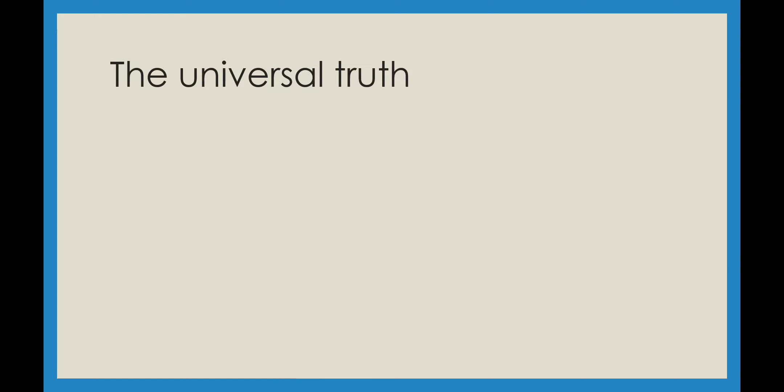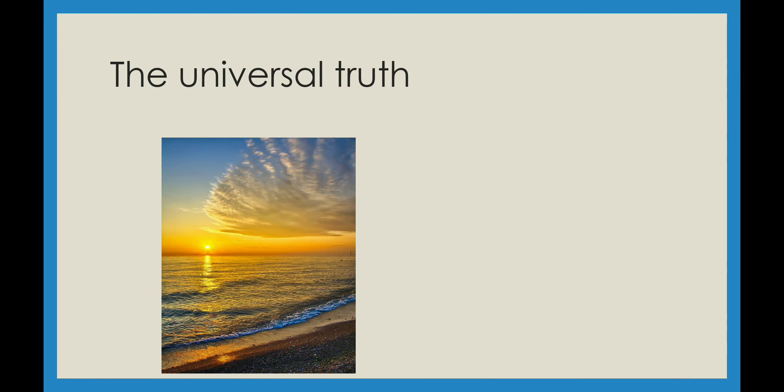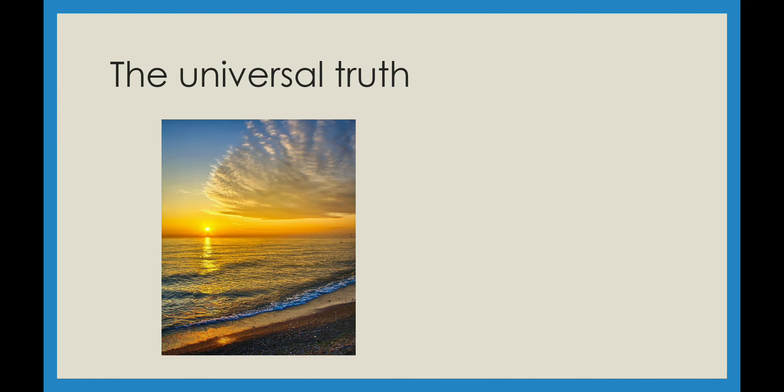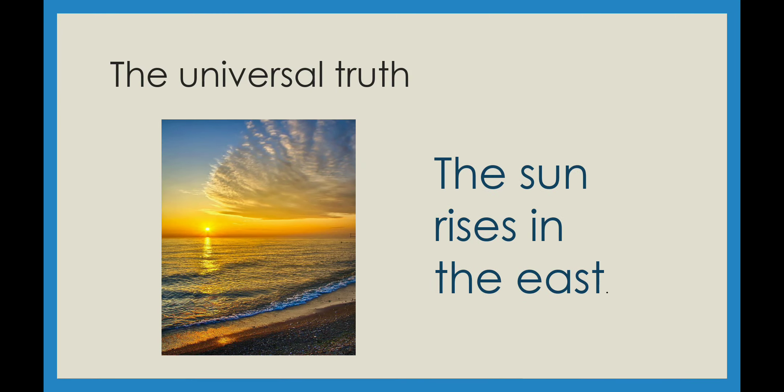The third use is for universal truth. When we talk about something that is always true — like 'the sun rises in the east' or 'all want peace' — these are universal truths, and we use present tense for them.